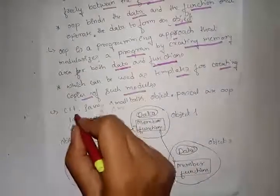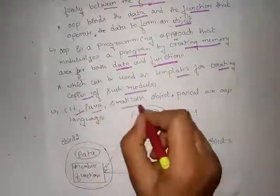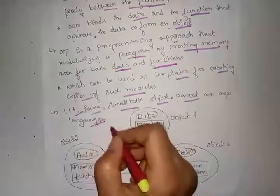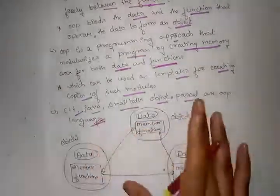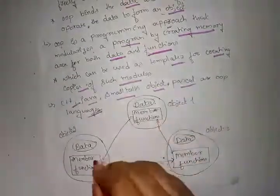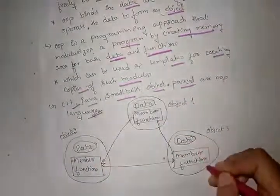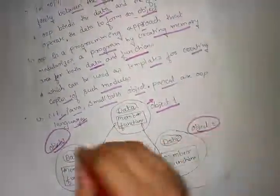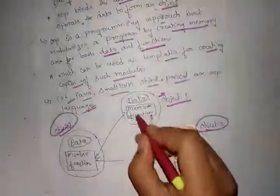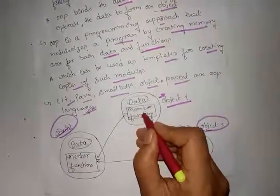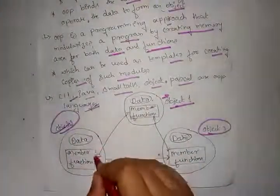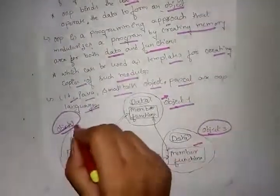Examples of object oriented languages include C, C++, Java, Smalltalk, and Object Pascal. In OOP, data members and member functions are combined to create objects — Object1, Object2, Object3. Using these objects, we can access member functions from one object to another.